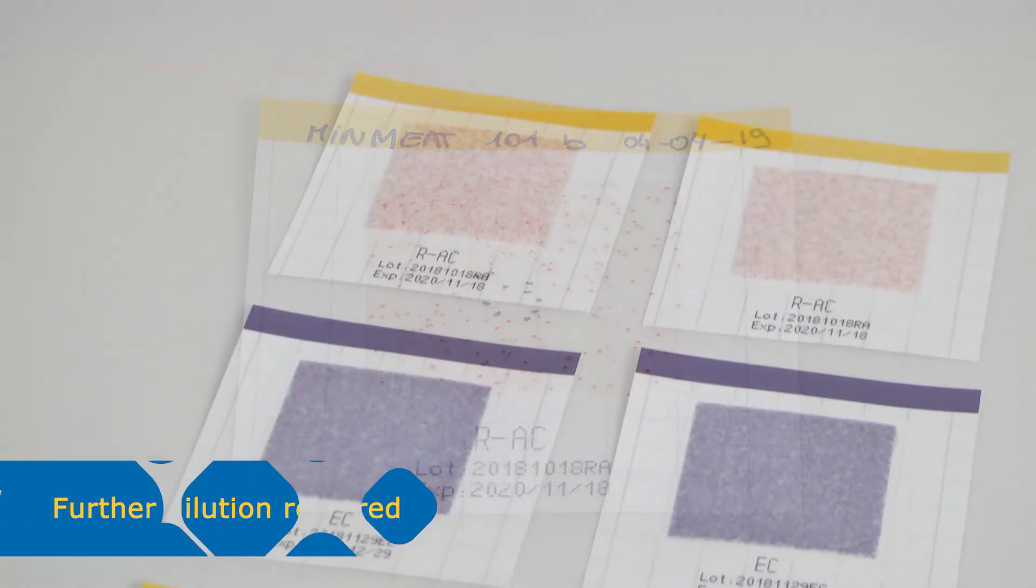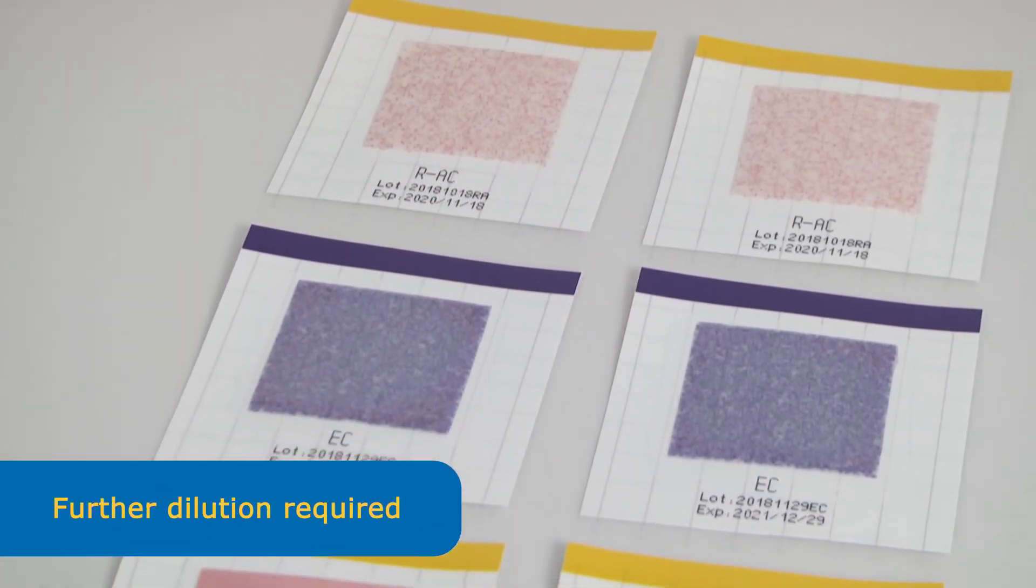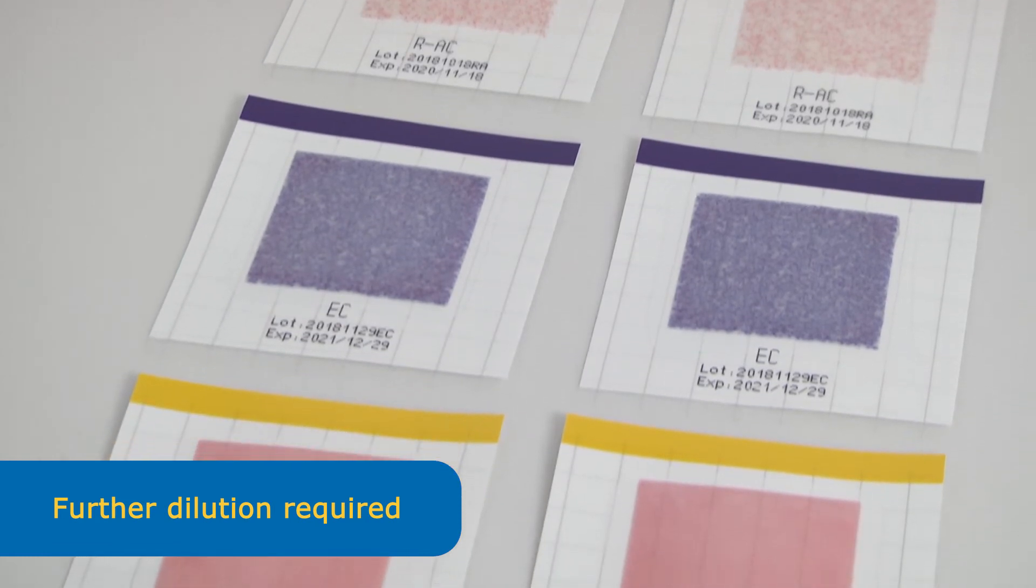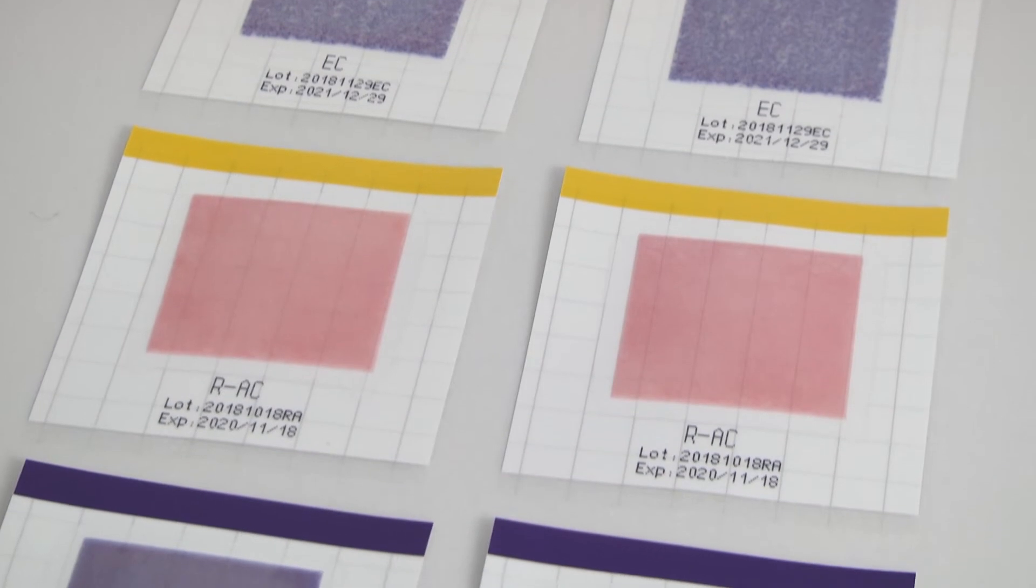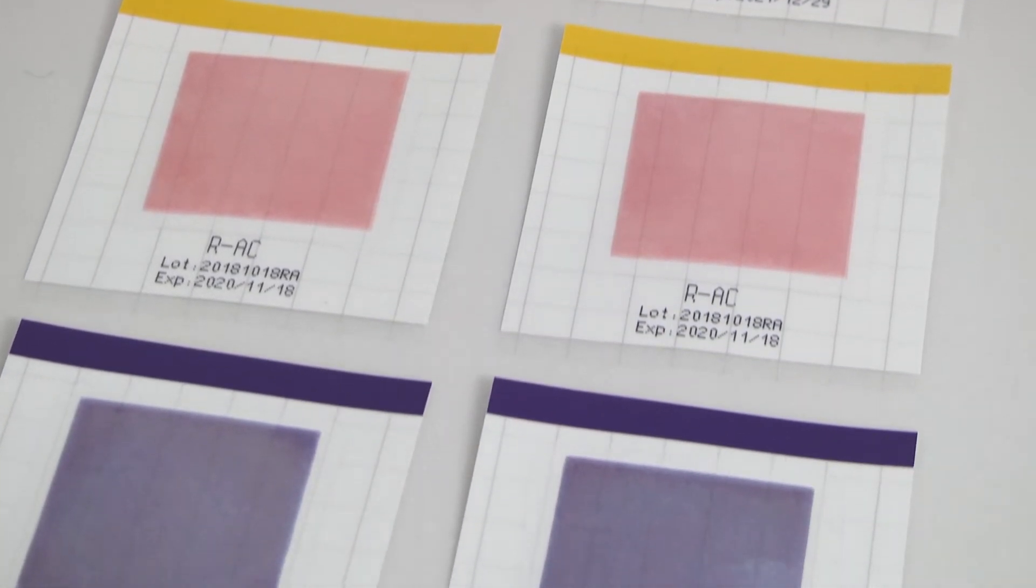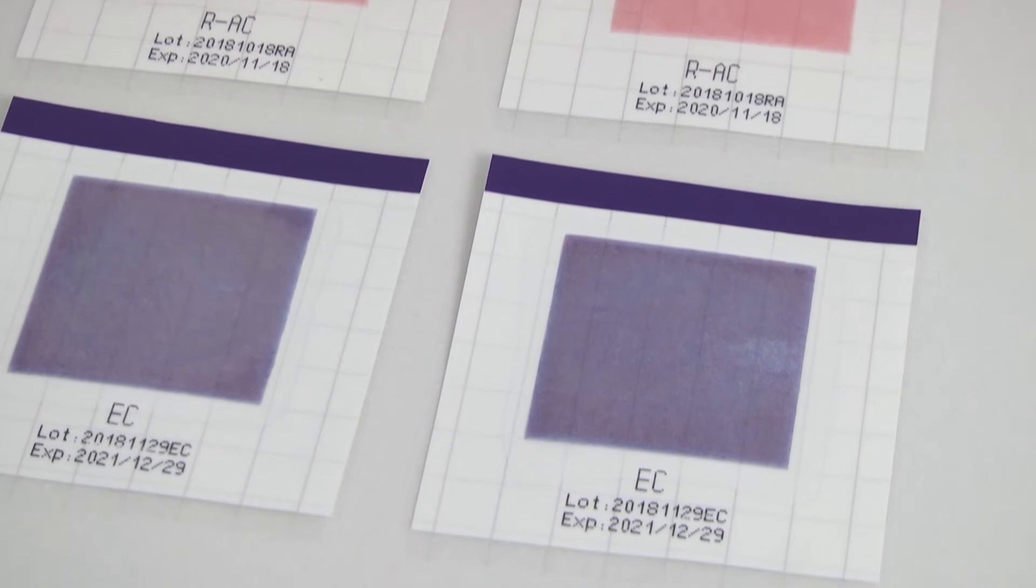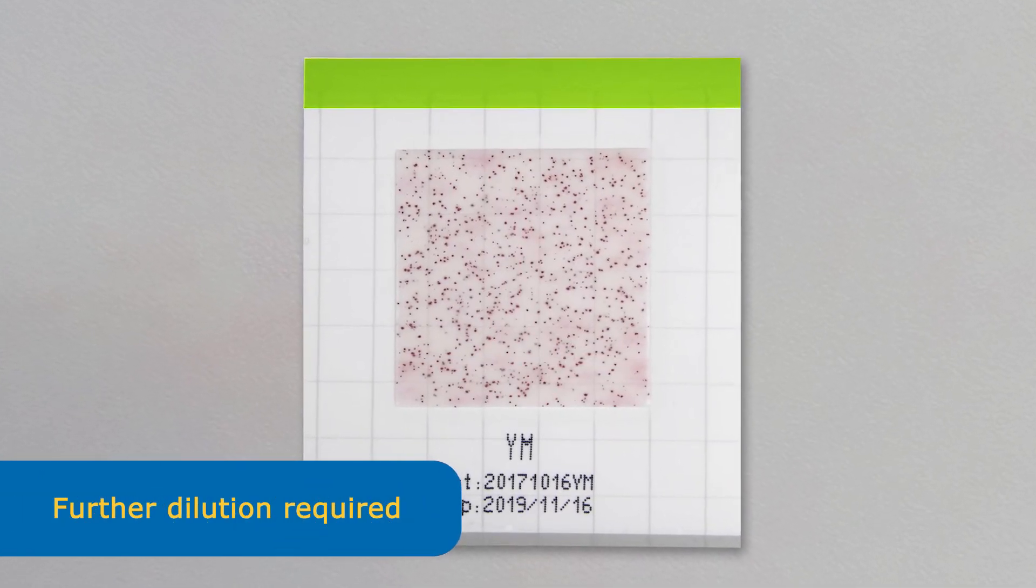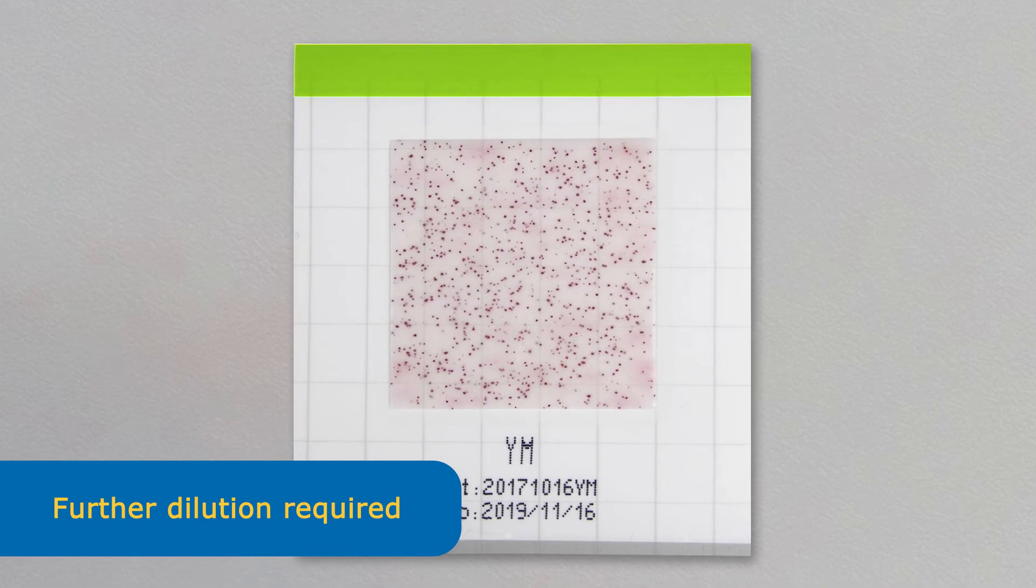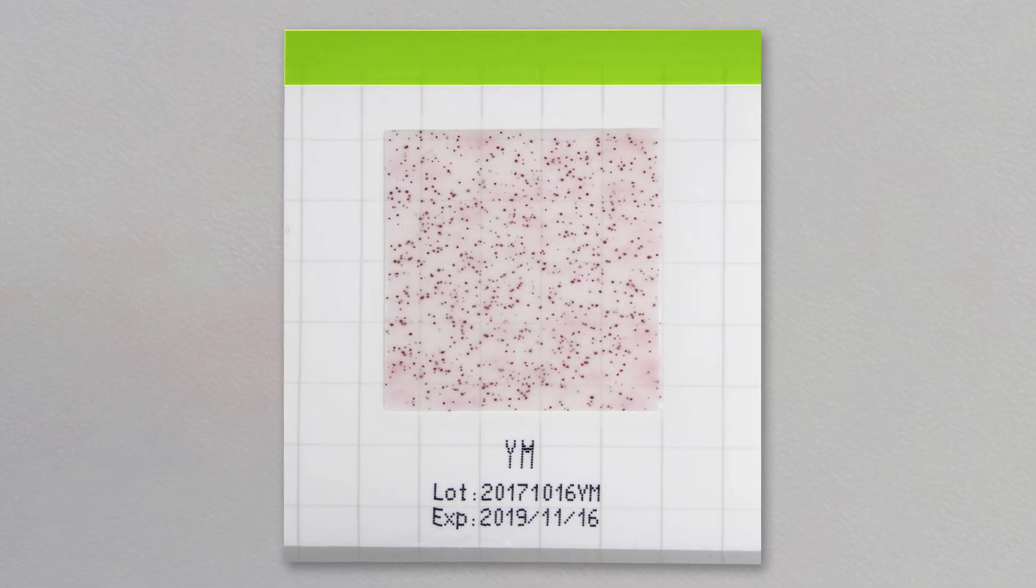If more than 400 CFU are grown, the entire pad may appear stained. In general, if more than 300 CFU are grown, the sample should be diluted further and retested. For yeast and mold, further dilution and retesting may be required at 200 CFU.